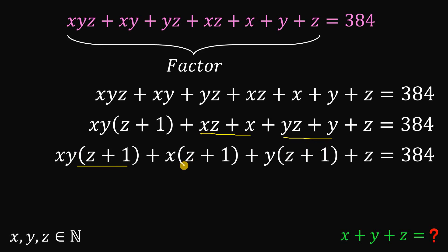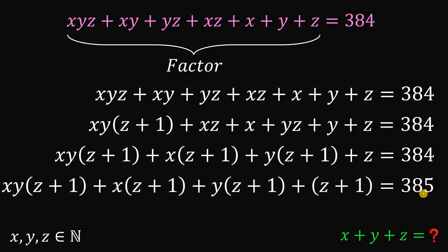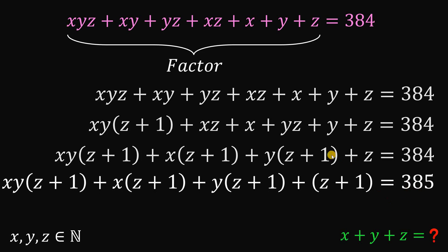Now, they all have a factor of z plus 1, except for this z. So what we're going to do is to add 1 on both sides to have z plus 1. And on the other side, we have 385. So 384 plus 1 is 385. Now let's focus on this result.